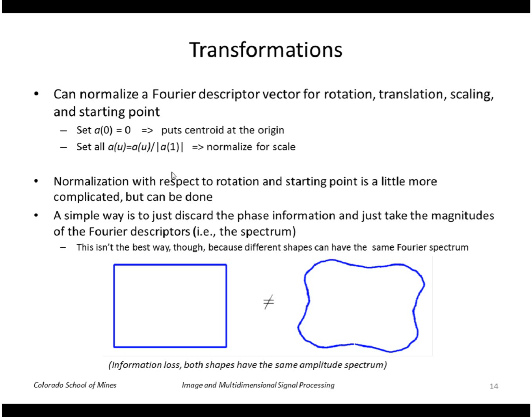It's not ideal, of course, because we are losing information, like different shapes can have the same spectrum if we discard the phase.